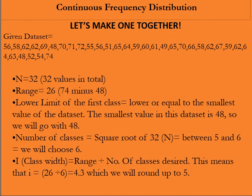Number of classes will be determined by the square root of n which means the square root of 32 and hence it will lie between 5 and 6. As usual, we are going to pick 6 as the desired number of classes. I or class width will be range divided by the desired number of classes which means 26 divided by 6. This will give us 4.3 which we will round up to 5. Notice how we have rounded up the number and not rounded it off. Had we rounded it off, it would have been 4.